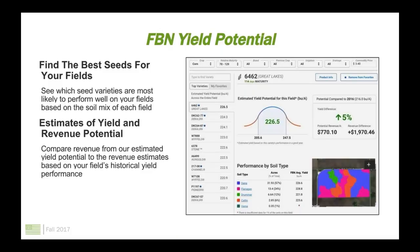Yield Potential is another great feature, and its backbone is that SeedFinder database. Yield Potential helps you find the best seeds for your specific fields by combining the unique information about the soil mix on your fields with millions of acres of data across thousands of seeds in our database. Based on the profile of your field, it surfaces the top seeds you should consider planting. It can also compare what you've previously planted and the yield you got against the expected yield from recommended seeds, showing potential revenue increases.